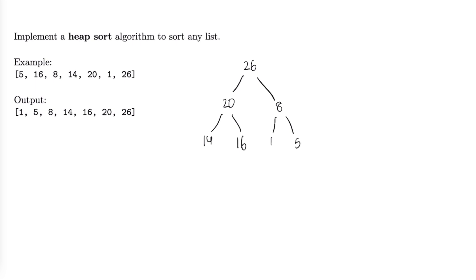If we write this in order we would have 26, 20, 8, 14, 16, 1, and 5. Now this is not in sorted order, but we notice one important thing: the very first element in a max heap is always going to be the largest out of any of the elements in the heap. So we're going to make use of that.